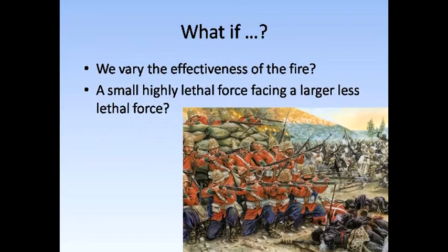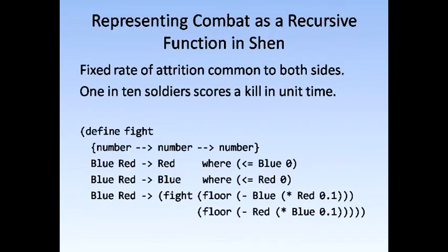Does this mean that in war the largest massed force always wins? Of course not. Our reasoning is based on a wireframe model in which the two sides are equal in all respects. But a smaller force has defeated a larger force where the firepower — attrition rate — of the smaller force is considerably greater. A paradigm is the Battle of Rorke's Drift, where a company of British soldiers armed with Martini-Henry single-shot rifles held off several thousand Zulus armed largely with stabbing spears. Our fight function treats the attrition rate as constant at 0.1 for both sides. However, we could instead choose to enter these attrition rates as a parameter — a process called parameterization in computer science — and simulate confrontations of technologically disparate forces. I'll leave it to you to download Shen and try for yourself.